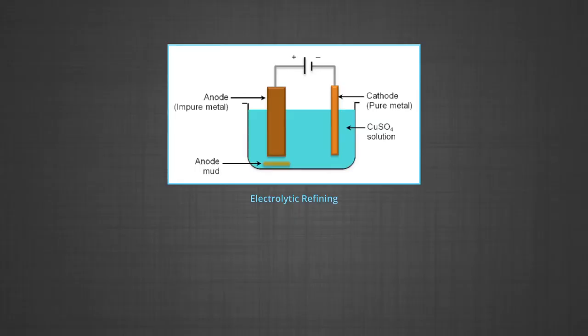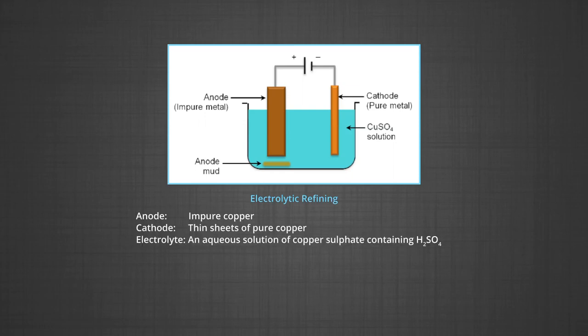Copper is refined using this electrolytic method. Anodes are of impure copper and cathode as pure copper strips are taken. The electrolyte is acidified solution of copper sulfate. At anode, impure blister copper is taken. At cathode, thin sheets of copper and electrolyte is an aqueous solution of copper sulfate containing little amounts of sulfuric acid.